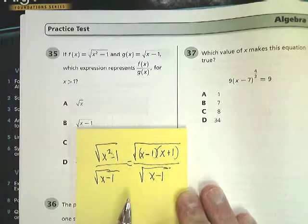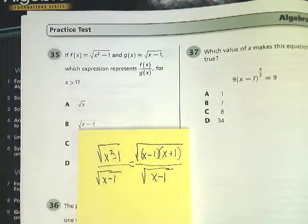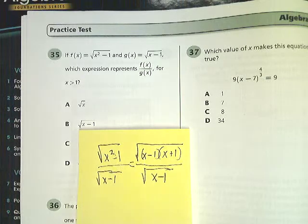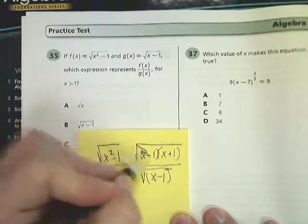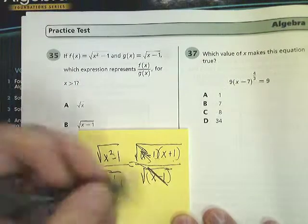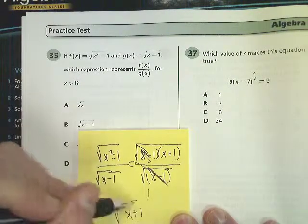And now since I'm dividing, I can look at what I have on the top and the bottom, because 5 divided by 5 is just 1. Well, I have x minus 1 on both the top and the bottom. So I look at what I have left, the square root of x plus 1.